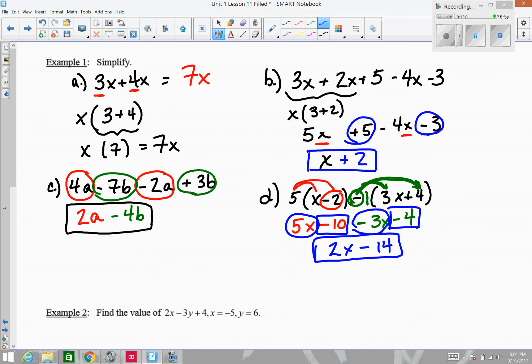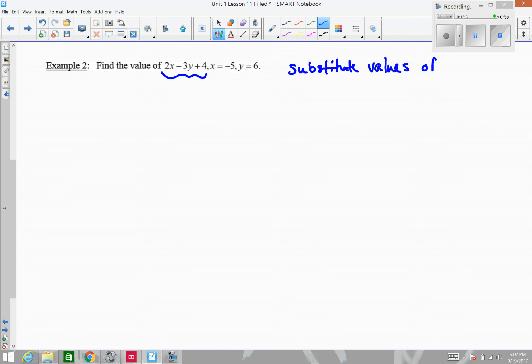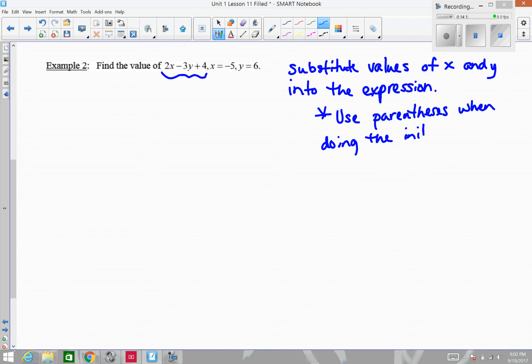Let's look at this example number 2 below. You want to find the value of an expression, 2x minus 3y plus 4, and we're told that x is equal to negative 5 and y is equal to 6. Whenever you get something like this, all you need to do is substitute in the value of x and y into the expression. And a very good habit to get into is when you do the substitution, put parentheses around the values you are substituting.